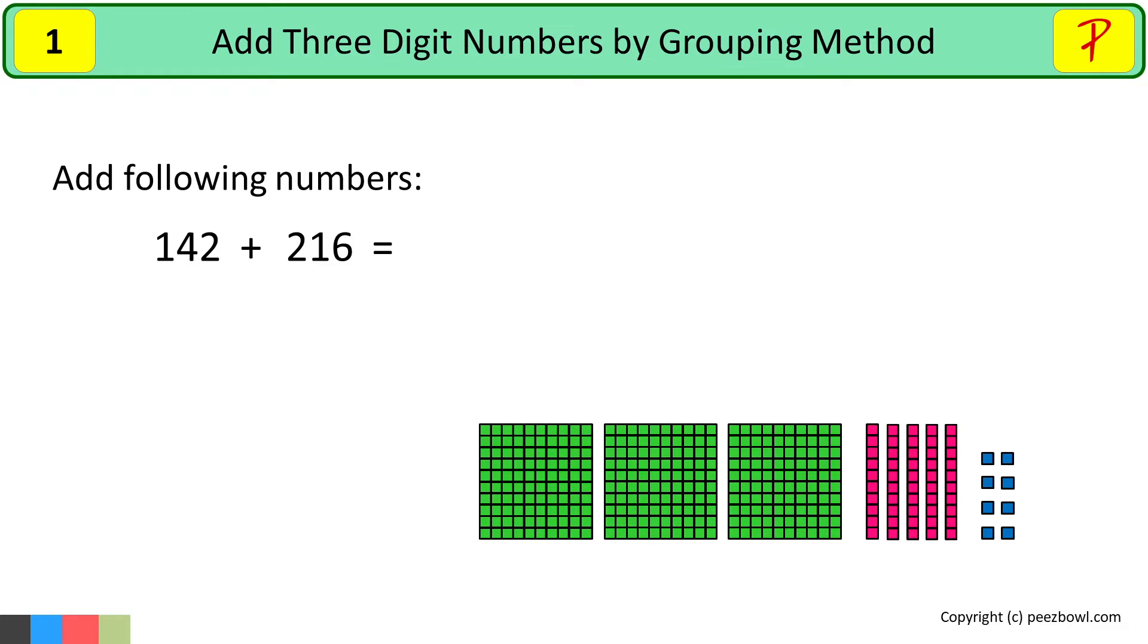So what you see here is the result when you add 142 and 216. Let us write the number we see here. At the hundreds place, we have three hundreds. So I will write three here. At the tens place, we have five tens. So I will write five here at the tens place.